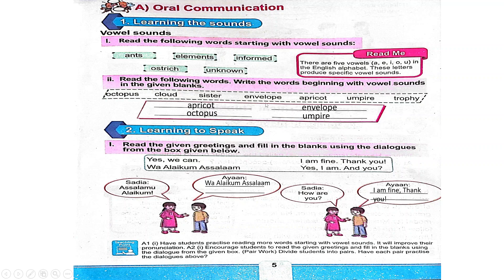The first vowel is A. Do we have a word here that begins with A? Is it octopus? No. Cloud? No. Sister? No. Envelope? No. Apricot? Yes! So we will write apricot here.